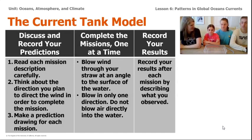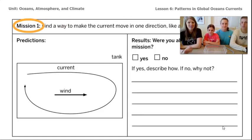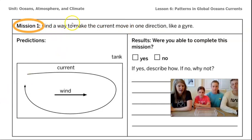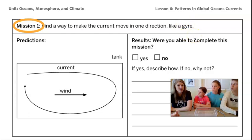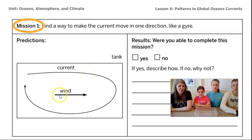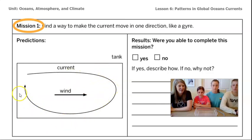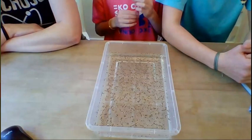Charlotte, you get to do the first mission. In this mission, what we're trying to do is find a way to make the current move in one direction like a gyre. My students have learned that the word gyre just means an ocean current that moves in a circular path. So the prediction we drew beforehand is that if we blow with wind across the middle of the container, then we could create a current in the shape of a gyre. Let's see if we can make this work.